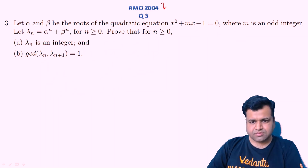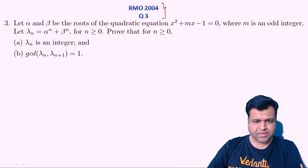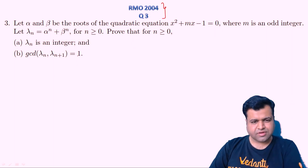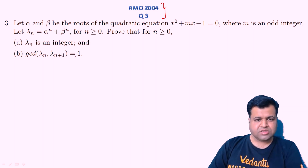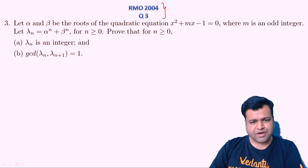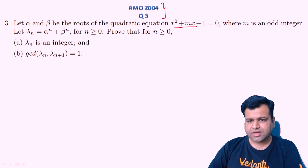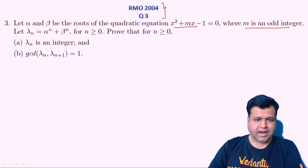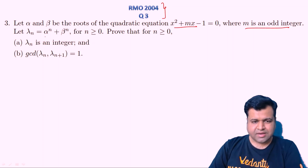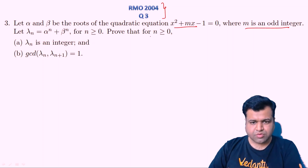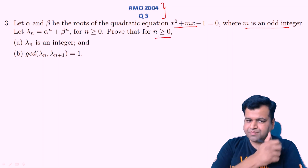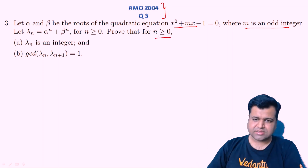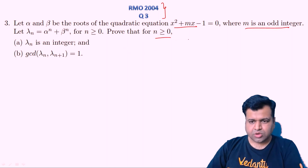So this question is from year 2004 and it is basically a mixture of number theory and algebra. The question states that alpha and beta are the roots of the quadratic x² + mx - 1, where M is an odd integer. And alpha^n + beta^n is defined as λₙ. Then we need to prove, for n greater than or equal to 0, that λₙ is an integer.